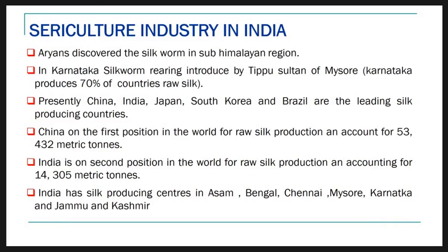Along with China, India is also a large silk-producing country. The Aryans discovered the silkworm in the sub-Himalayan region, after which it spread to the south region of India. In Karnataka, silkworm rearing was introduced by Tipu Sultan of Mysore, and now Karnataka produces 70% of the country's raw silk.